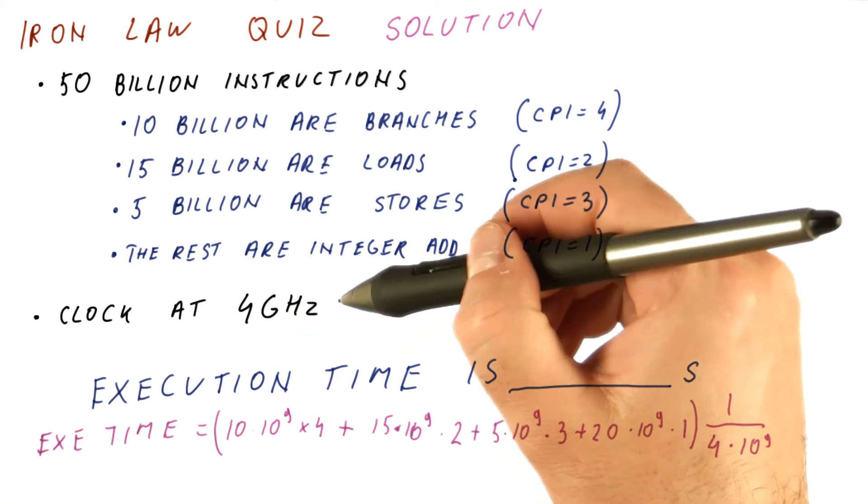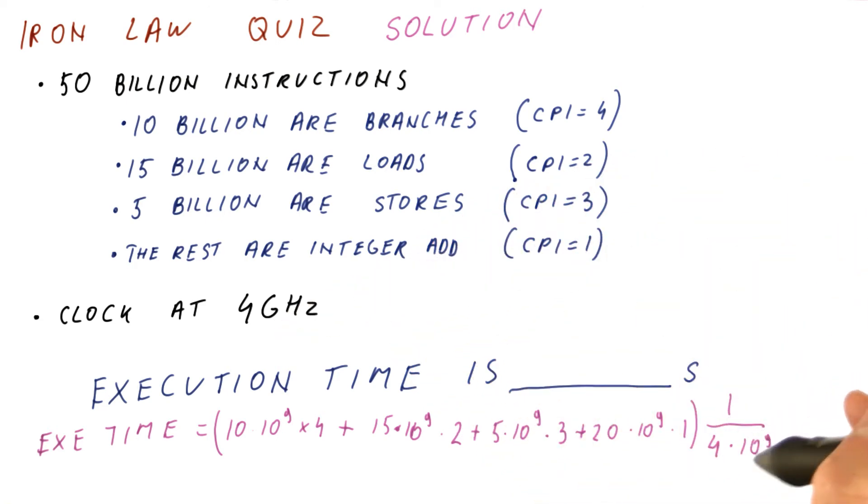Again, 4 gigahertz is the clock frequency. The clock cycle time is 1 over that. Now let's do the math here.